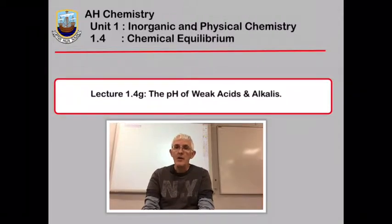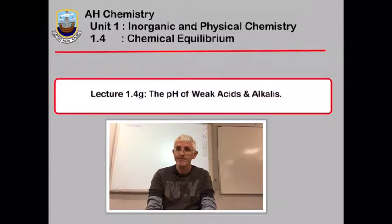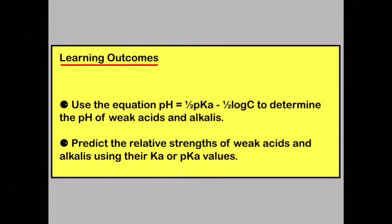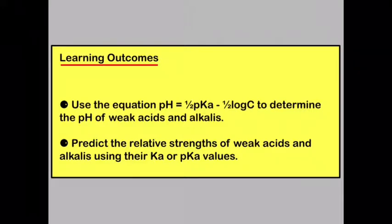In this lecture we're going to learn how to work out the pH of weak acids and weak alkalis. The learning outcomes are firstly to be able to use the equation pH equals a half pKa minus log c to determine the pH of weak acids and alkalis, and secondly to predict the relative strength of weak acids and alkalis using either the Ka or the pKa values.